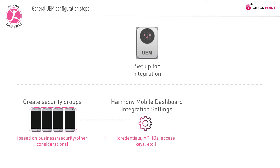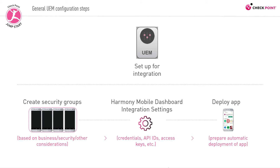Then, you configure the UEM to deploy the Harmony Mobile Protect app. Depending on the UEM provider and the type of implementation it supports, this stage will generally prepare the automatic deployment of the Harmony Protect app to the dedicated user devices. And that about encapsulates the major steps on the UEM's end. Naturally, there can be further configuration steps, but they are UEM dependent.